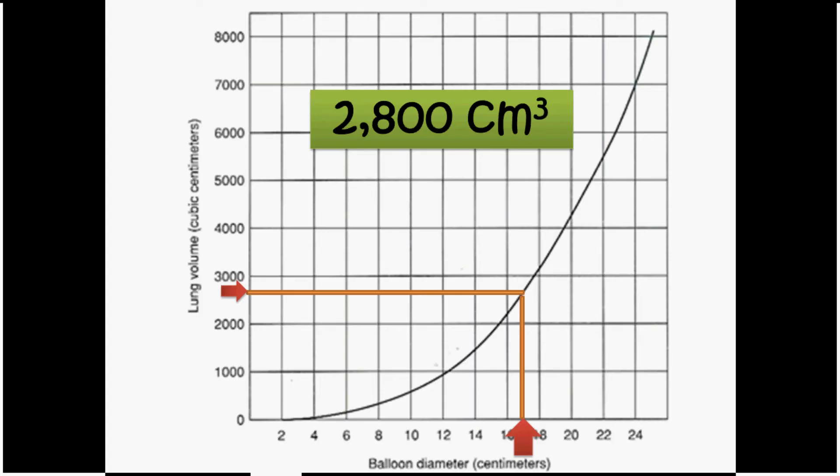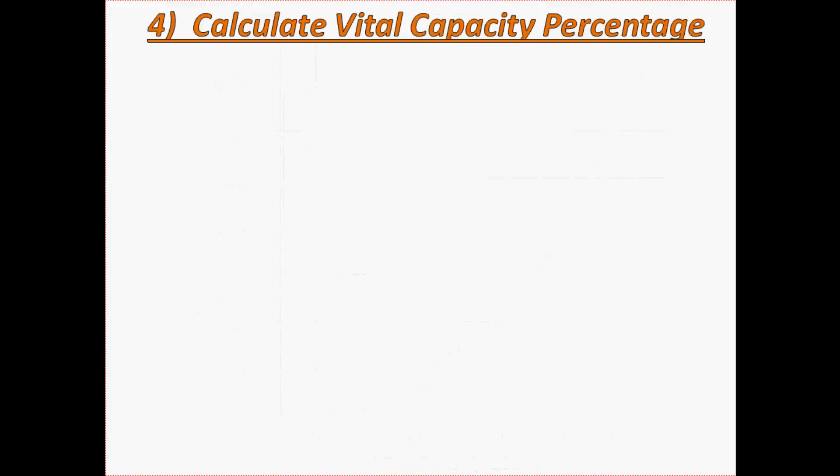So I can breathe out 2,800 cubic centimeters. What does that mean? Well, let's calculate my expected vital capacity percentage. Was I able to reach my expected vital capacity?